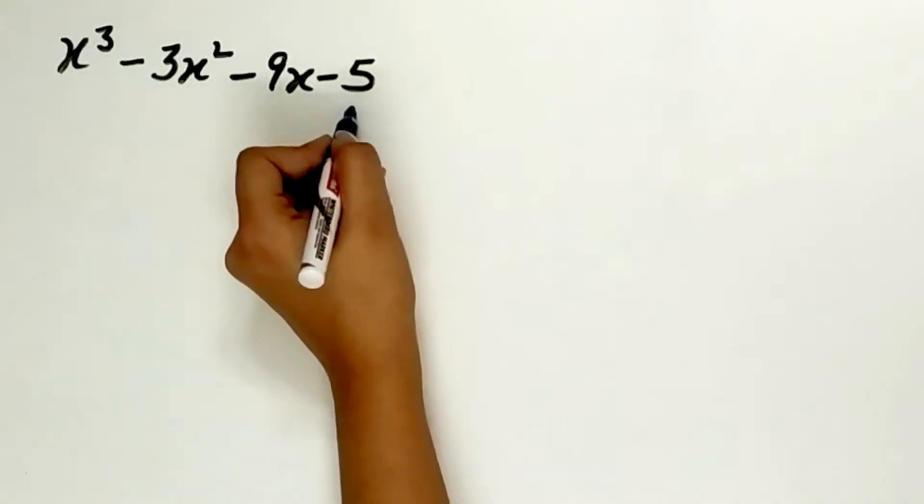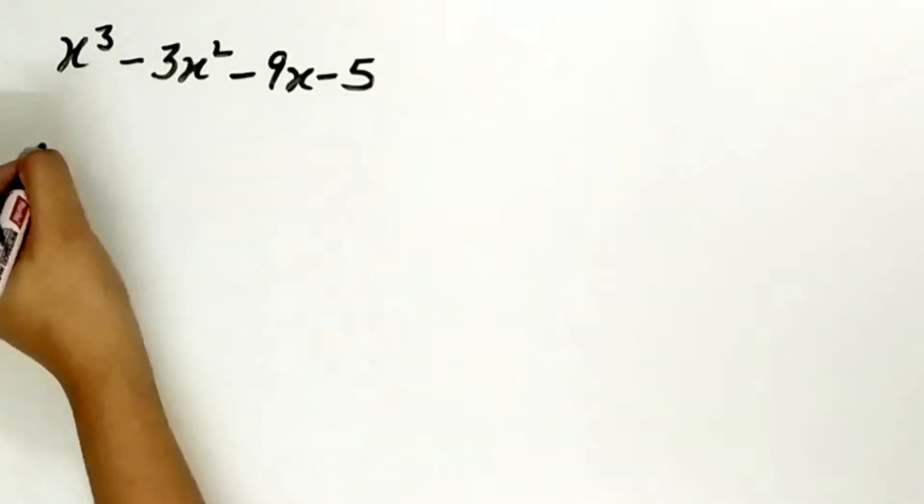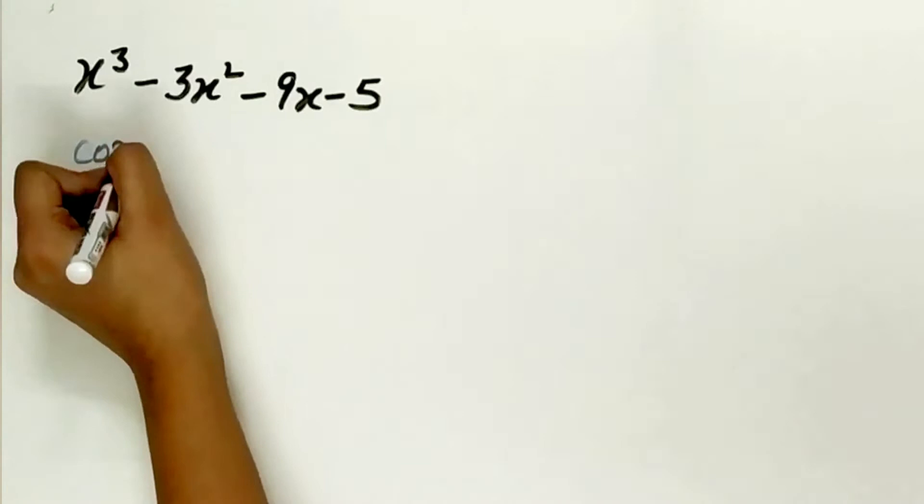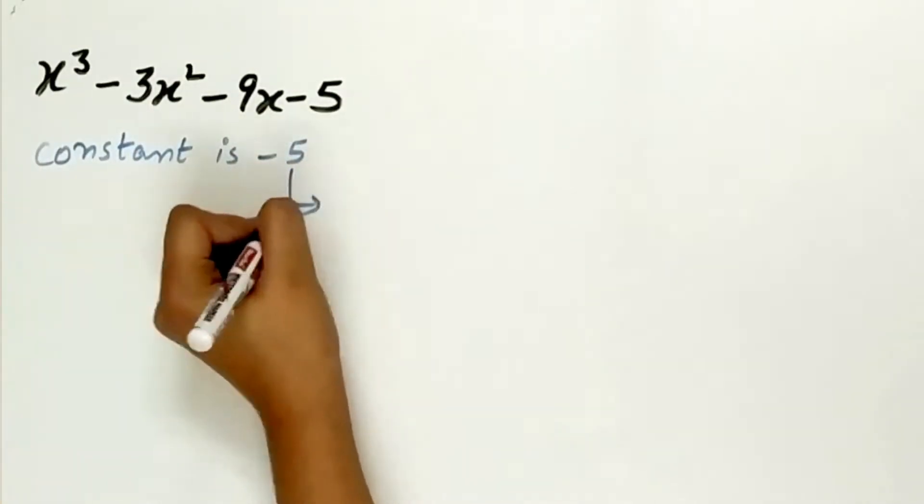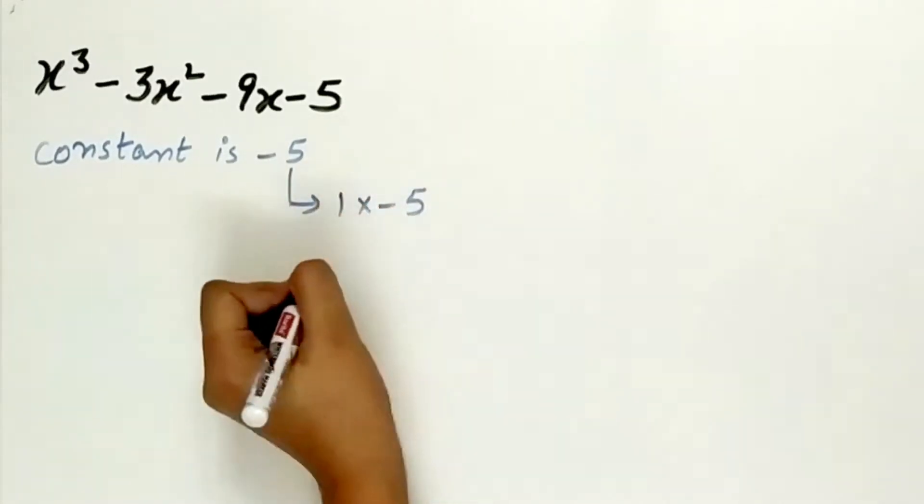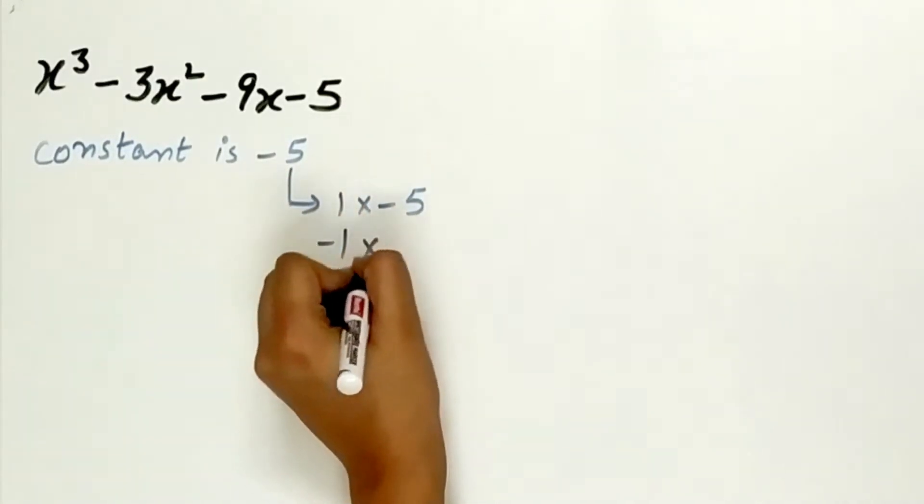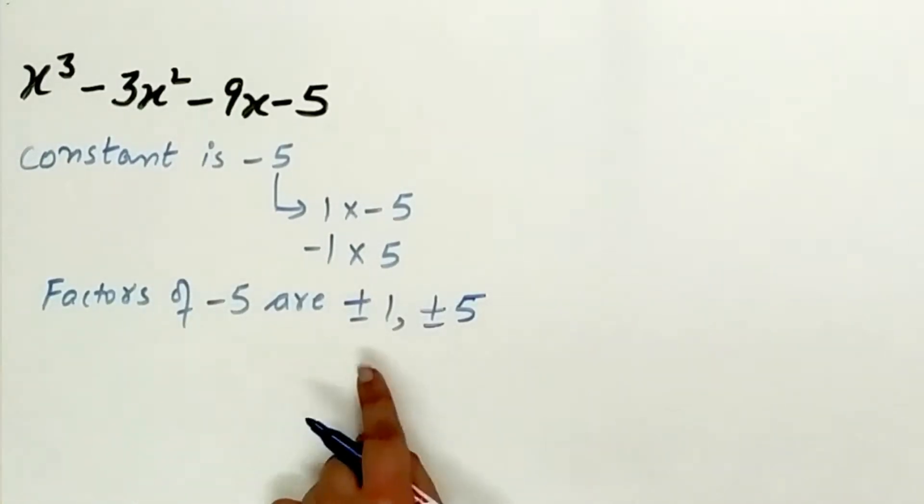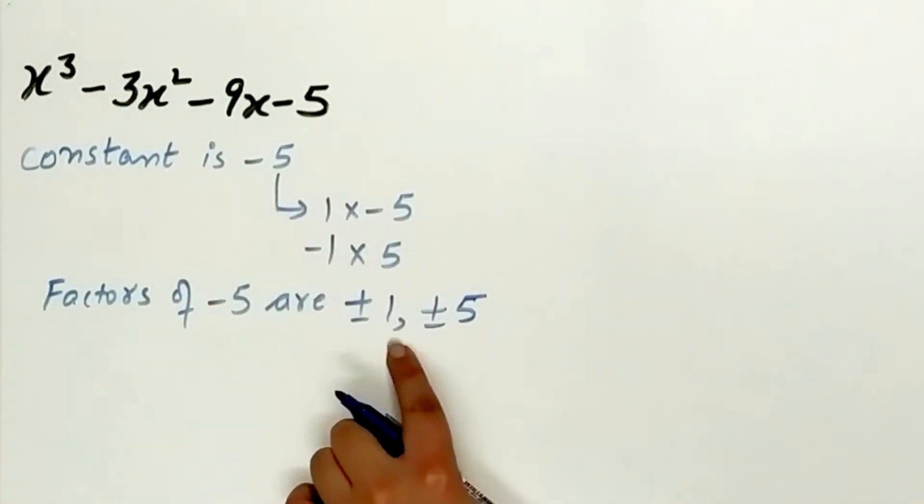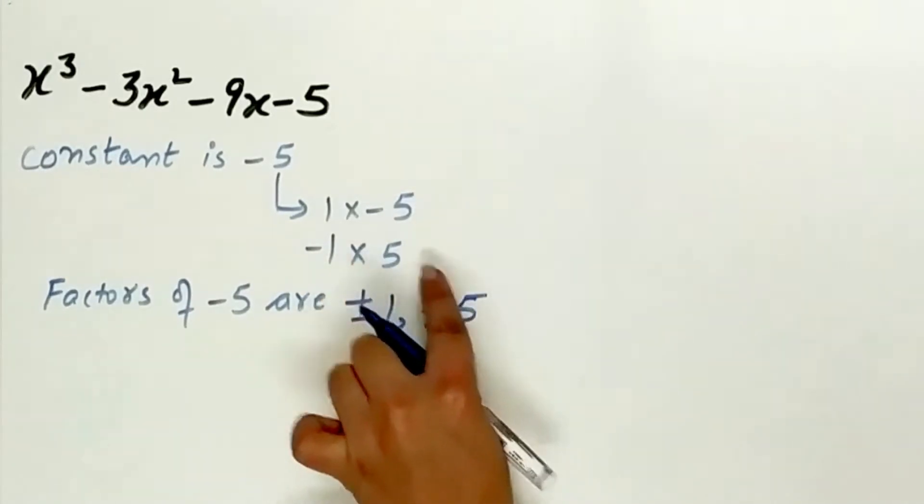Step 1 is to find the factors of the constant. Constant is minus 5. Its factors are 1 multiply minus 5 or minus 1 multiply 5. Factors of minus 5 are plus minus 1 and plus minus 5.